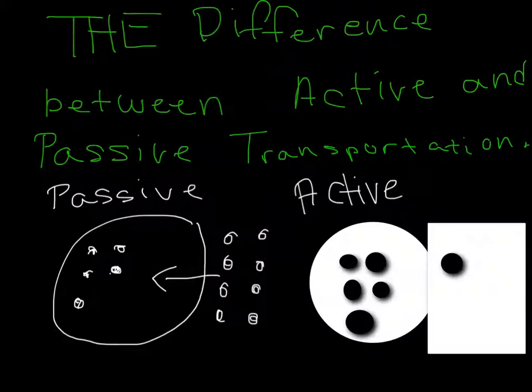The difference between active and passive transportation: passive transportation is always from high concentration to low concentration, while active transportation is where concentrations will always equal out.